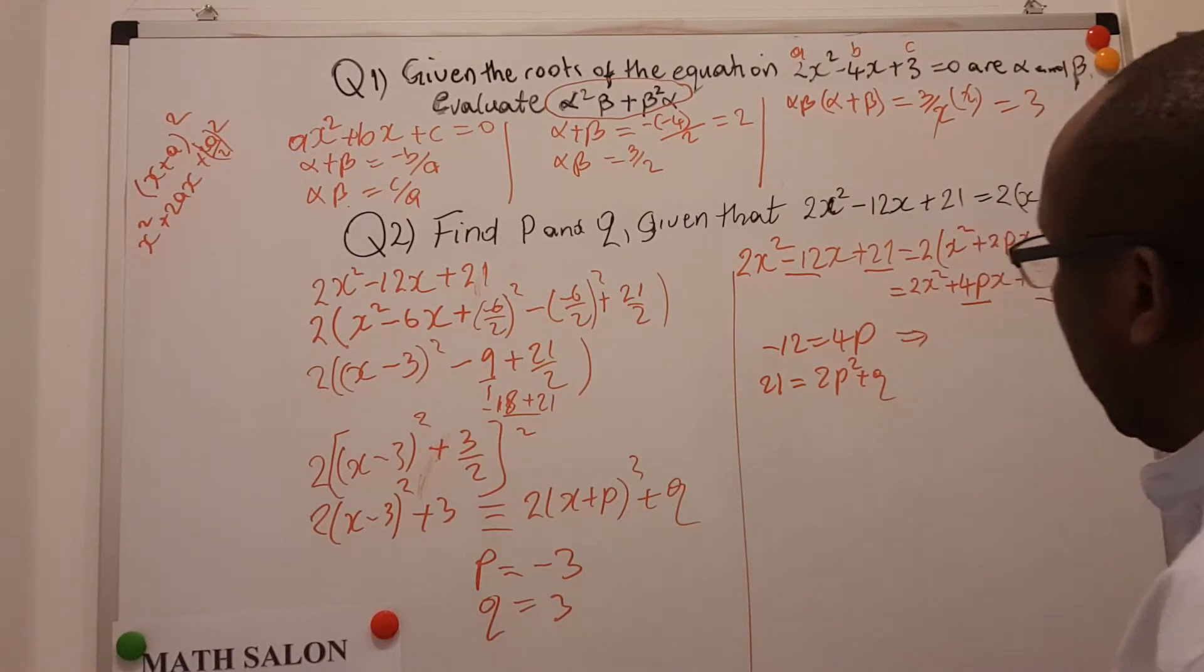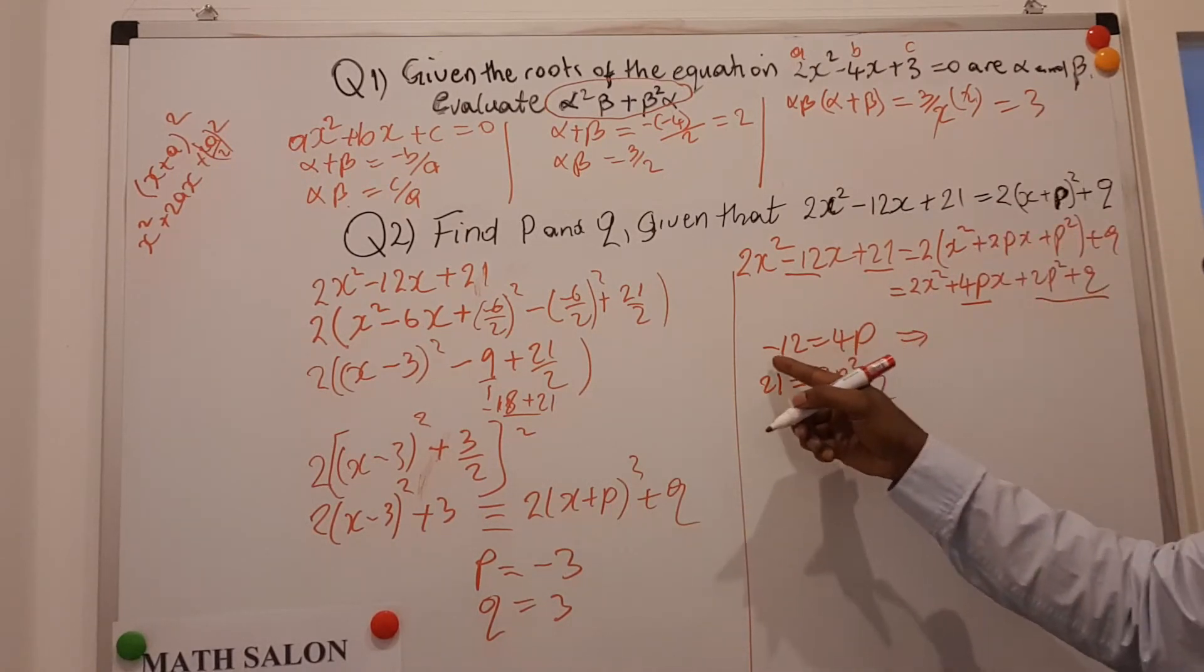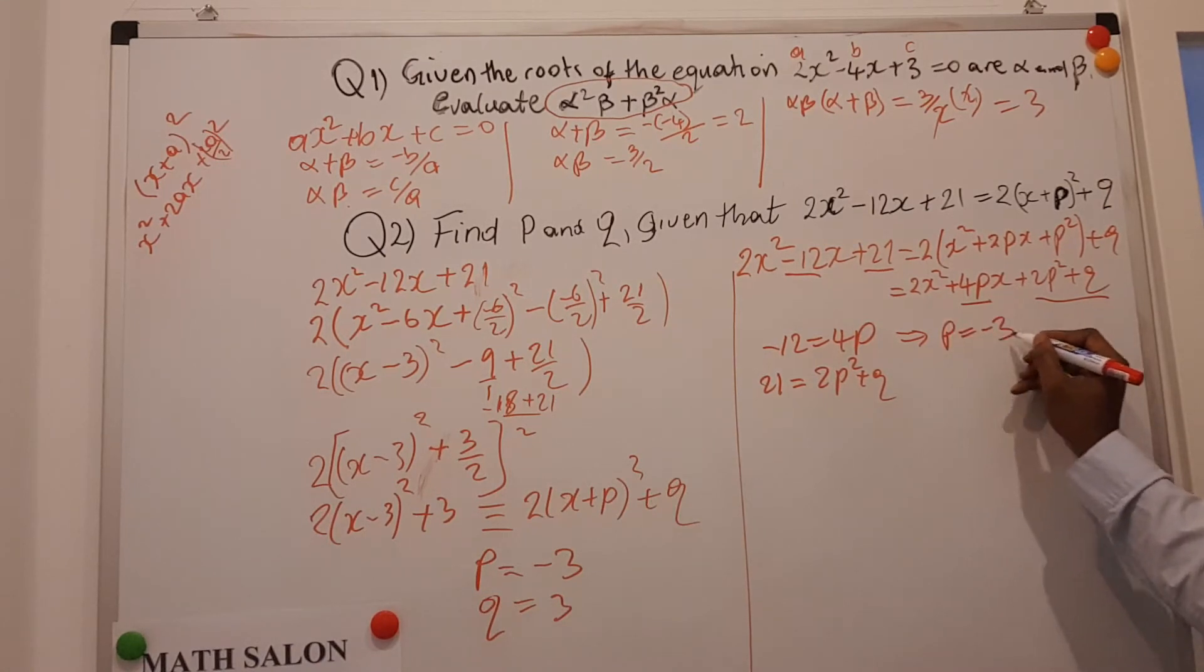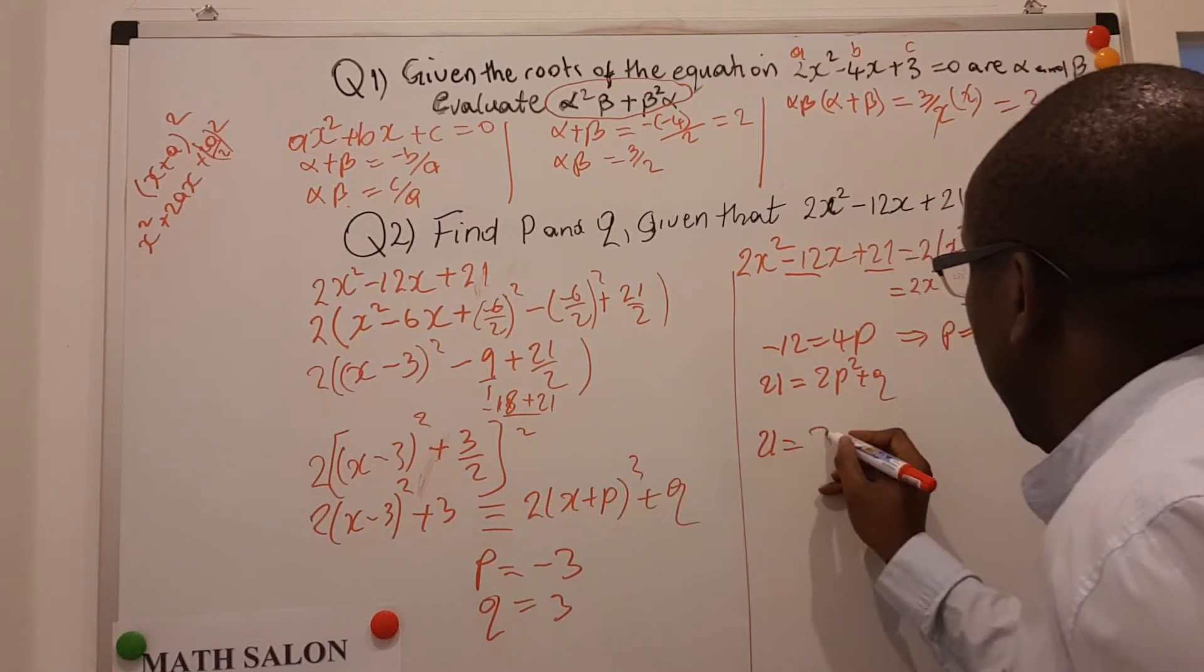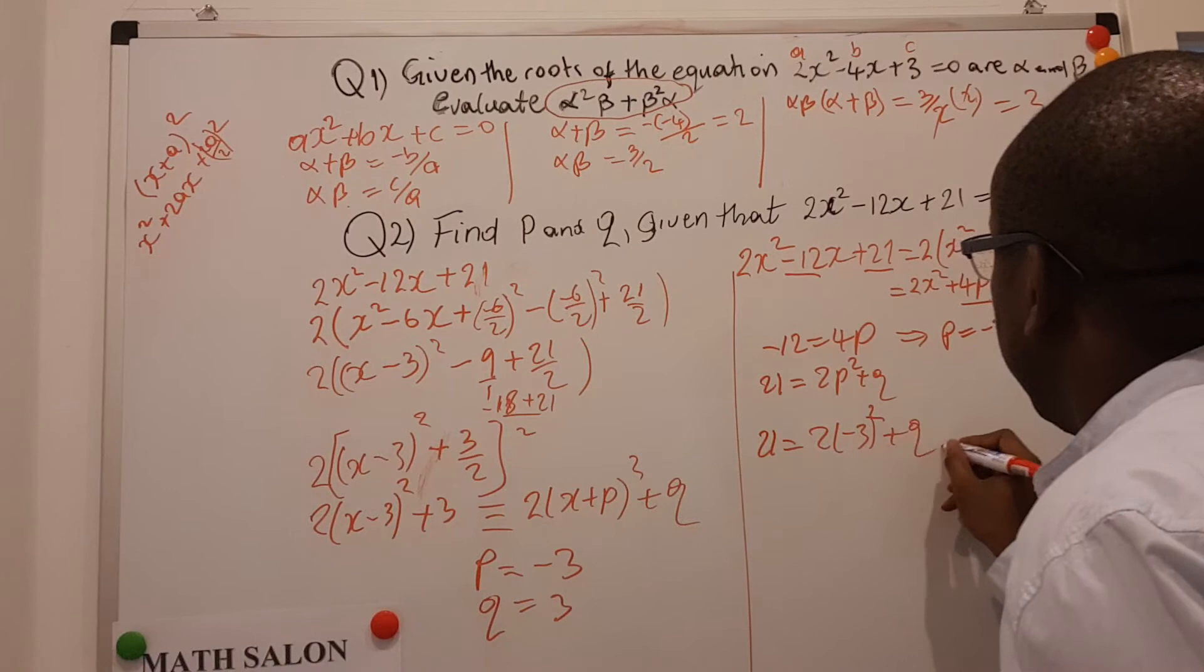From here, we see that p is equal to, you divide both sides by 4, that's minus 3. So I can take p, and substitute here. So I get that 21 is equal to 2 times minus 3 squared, plus q.